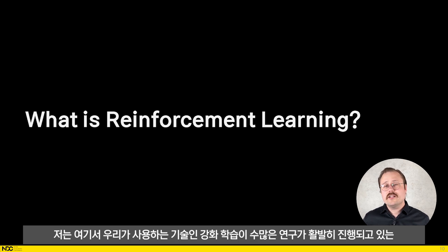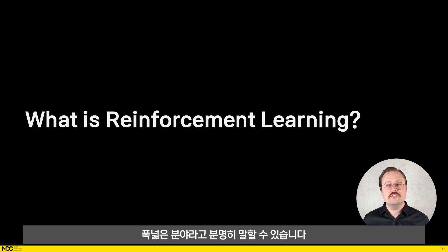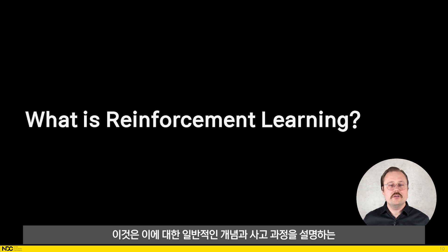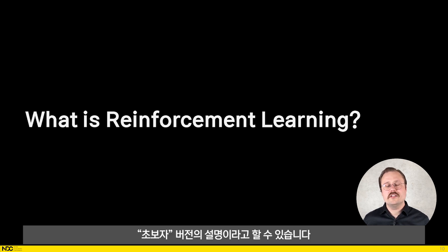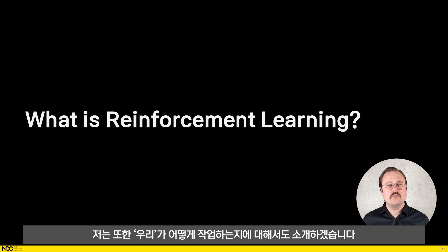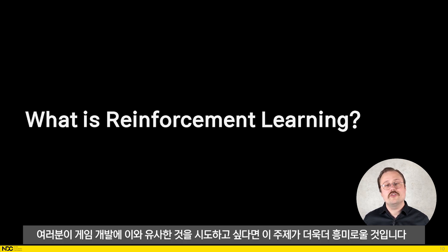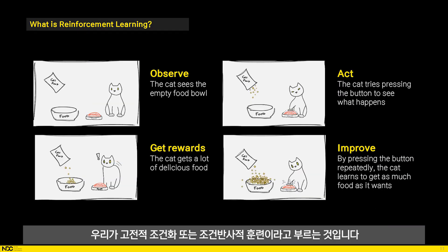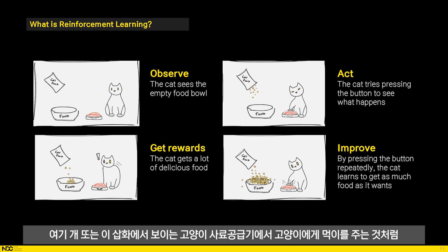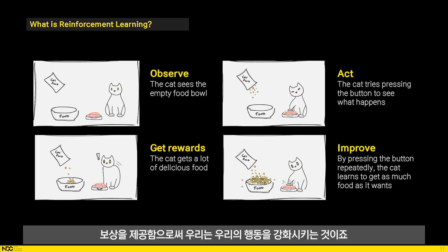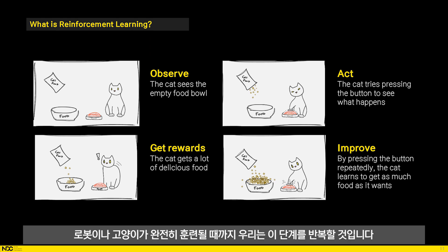So how does this work? I'll be clear that reinforcement learning is a very large field with lots of active research. This will very much be a 'for dummies' version to provide a general idea and thought process. I'll also talk a bit about how we work, which is maybe more interesting if you want to try something like this in your game development. In short, reinforcement learning is what we might call classical conditioning or Pavlovian training. We reinforce behaviours by giving out rewards, just like we do with our dogs or with a cat feeder. We can break this down into four steps, which we repeat until the robot or cat is fully trained.